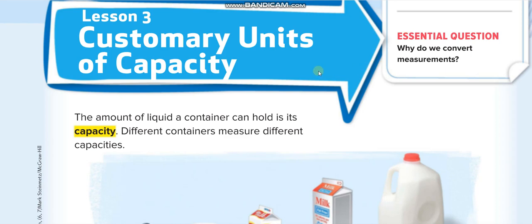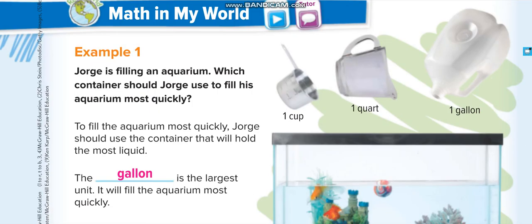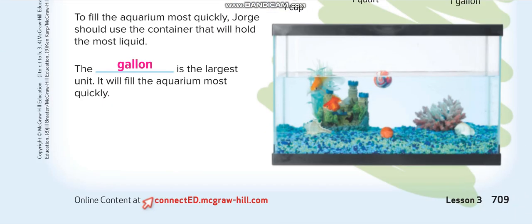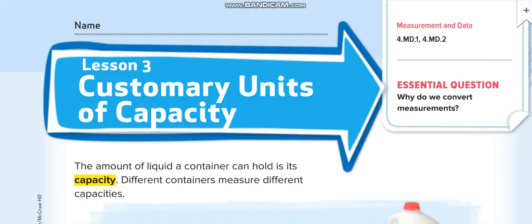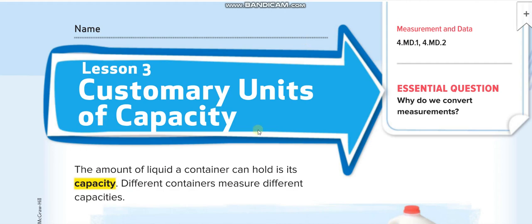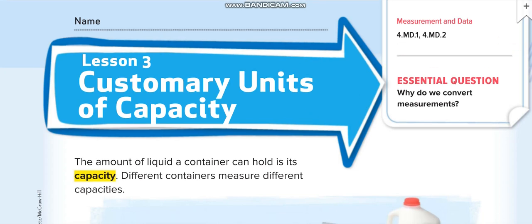Hello everyone, welcome back to another video lesson. Today's lesson is for Grade 4, Chapter 11, Lesson 3: Customary Units of Capacity, page 709. You already took a lesson about units of capacity, but that was metric units. This time we will learn the customary units.